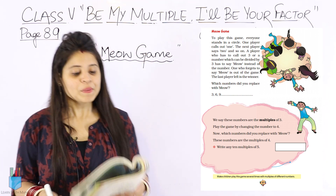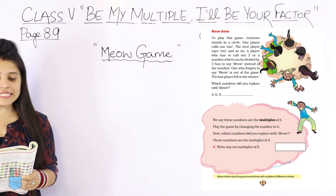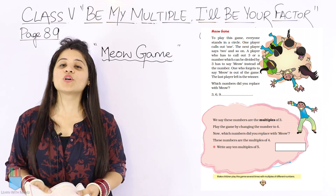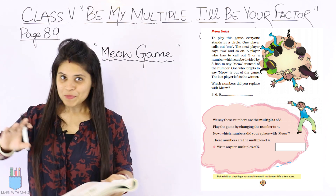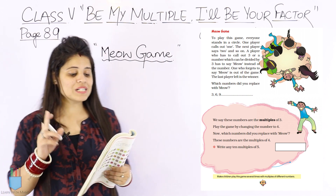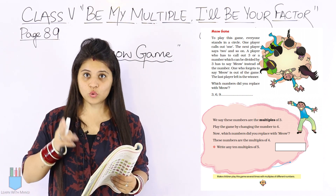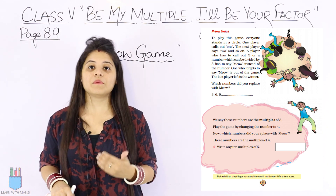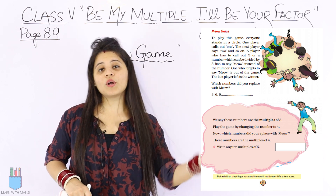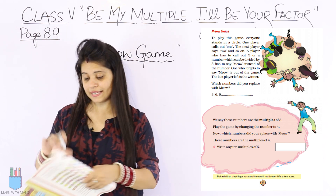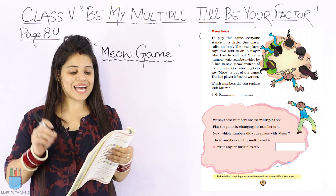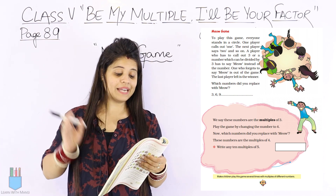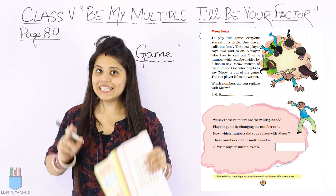So what is in this game? Let's see. To play this game, everyone stands in a circle — whether you want to play with friends or siblings. One player calls out 1, the next player says 2 and so on. A player who has to call out 3, or a number which can be divided by 3, has to say Meow instead of the number.